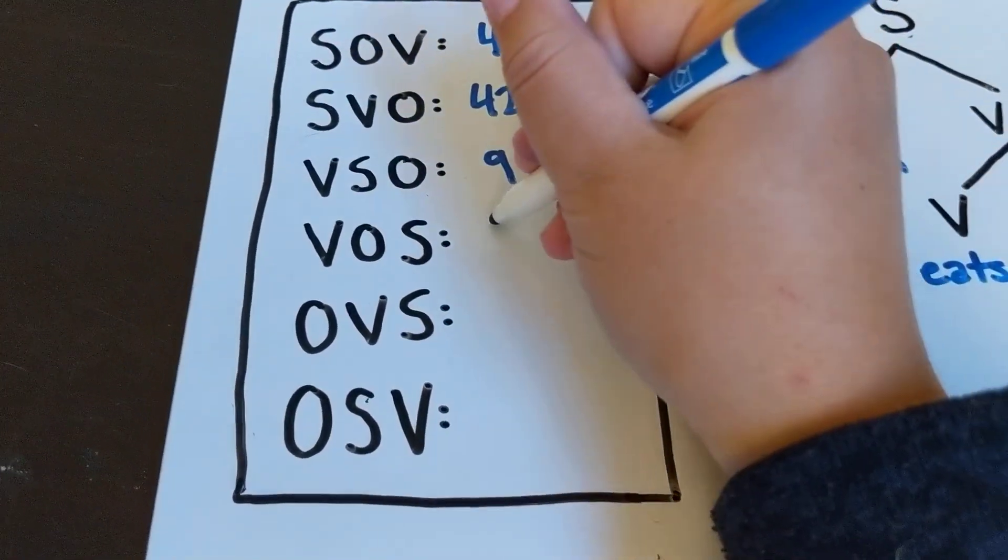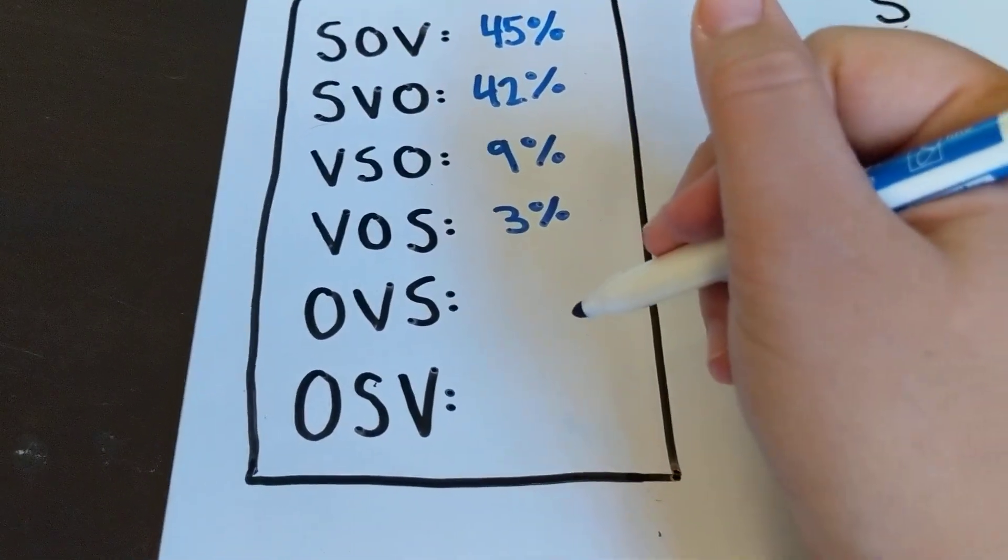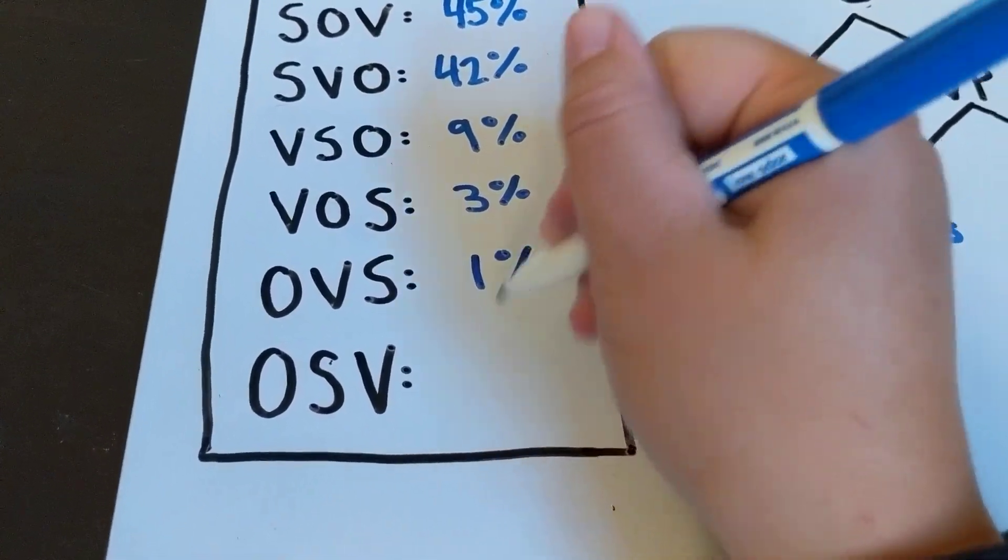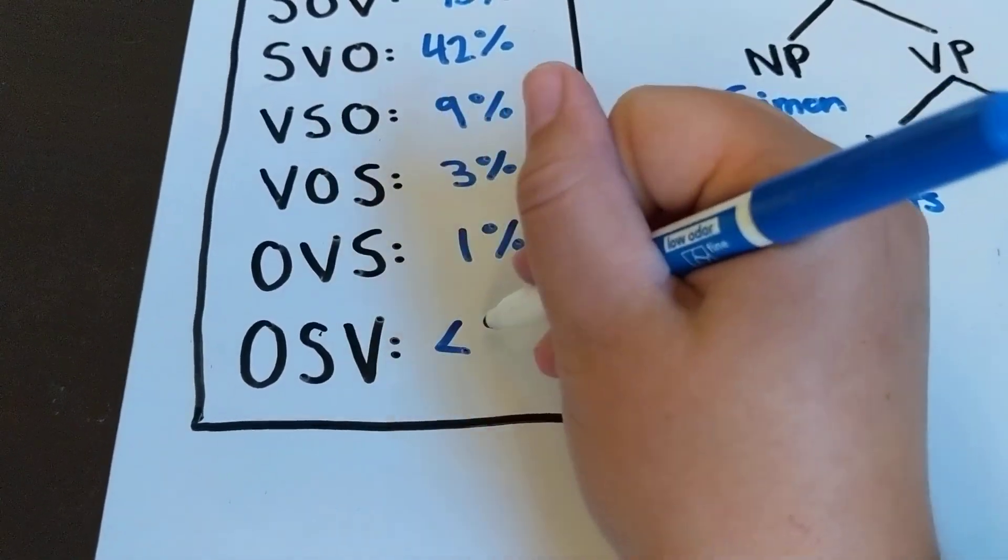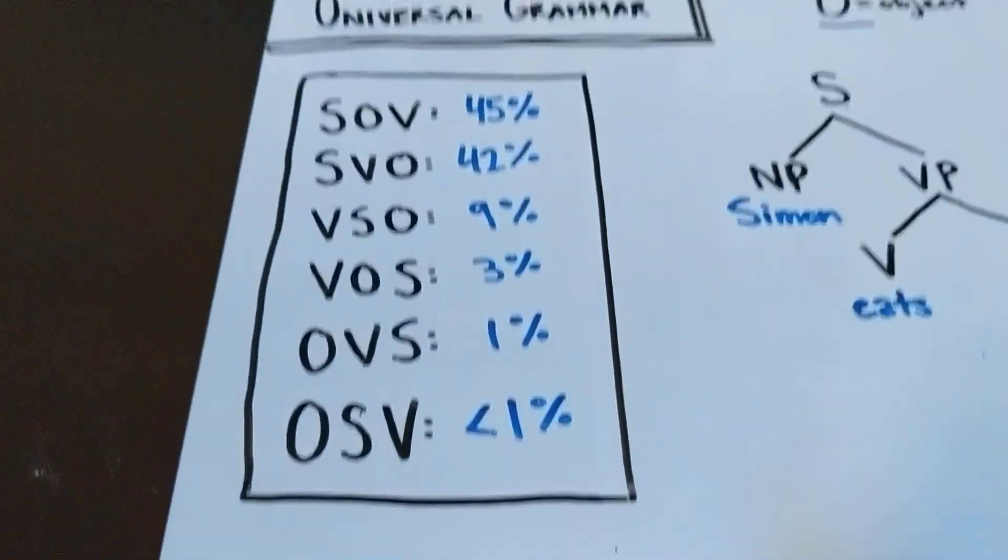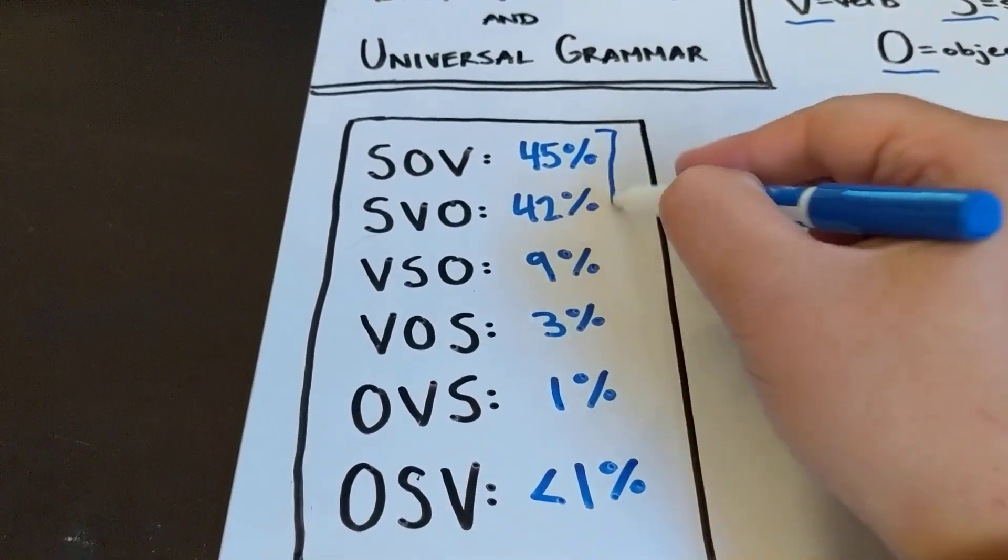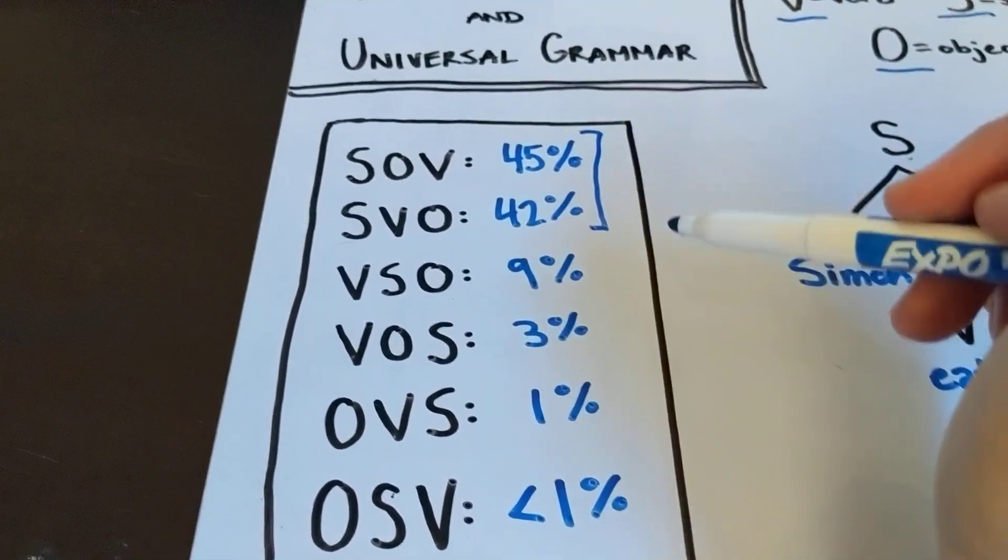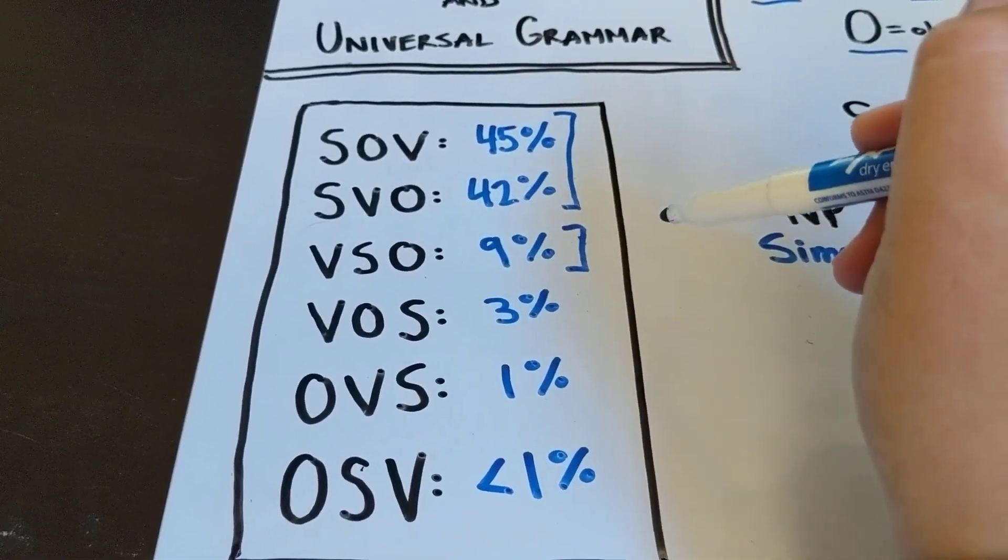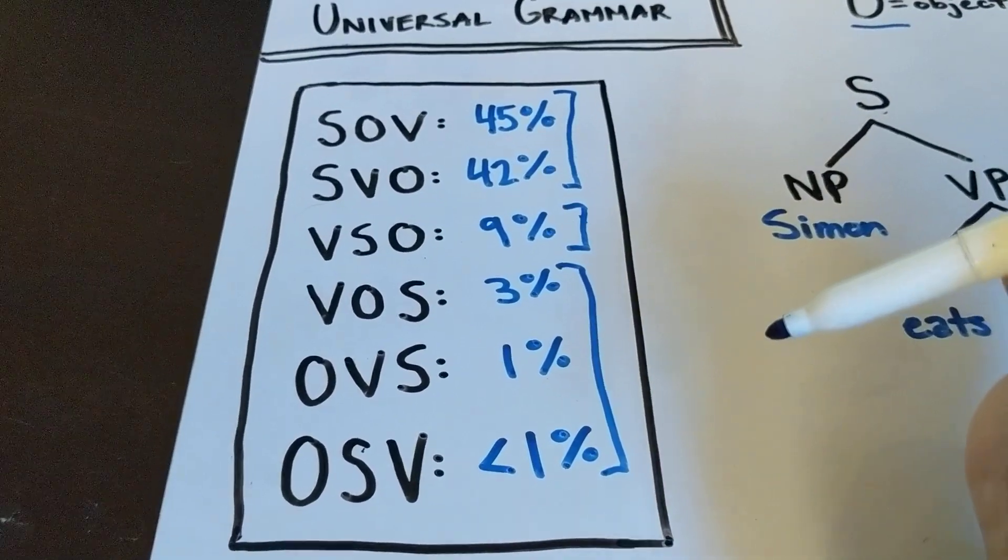VOS has about 3%, OVS has 1%, and OSV is less than 1%. It's only a couple of languages where this is the case. So you notice that really it's these two make up most of it. There's a non-negligible number that have VSO, and the rest of them are really very rare.